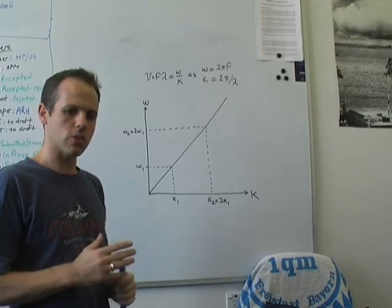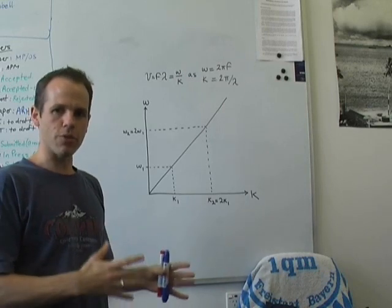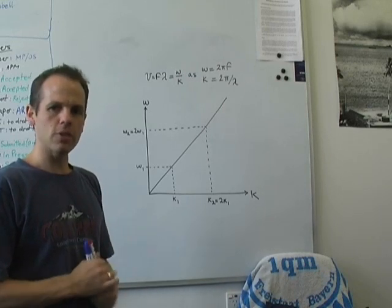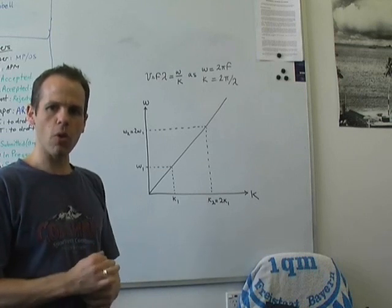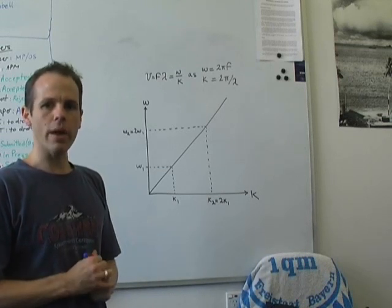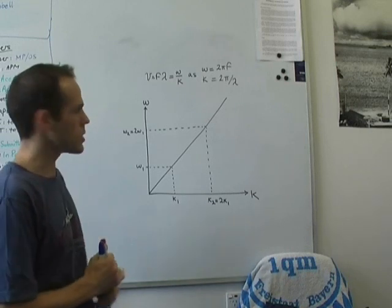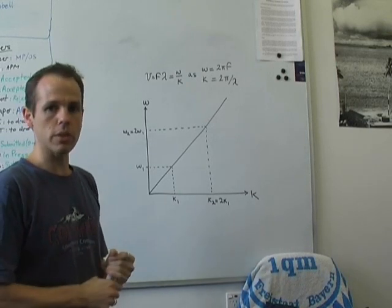As you get further along in physics, you sort of start forgetting about the idea of frequency and wavelength, and you start thinking in terms of two things called the angular frequency, omega, and the wave number, k. And these are quite simply related to the frequency and the wavelength.